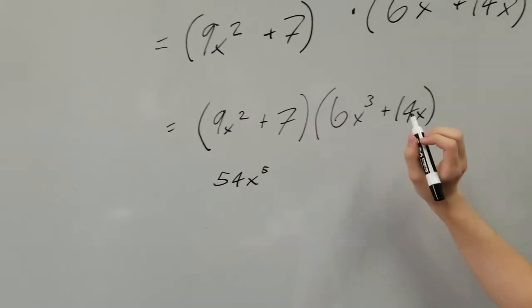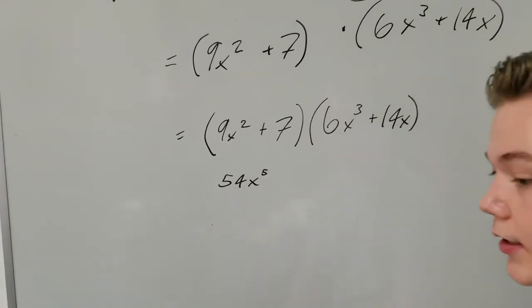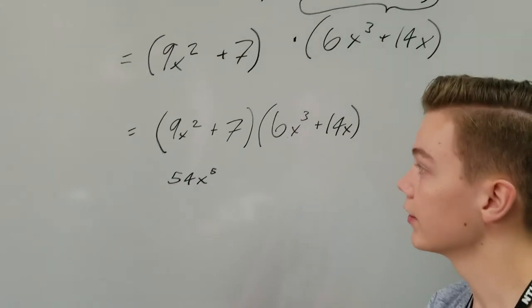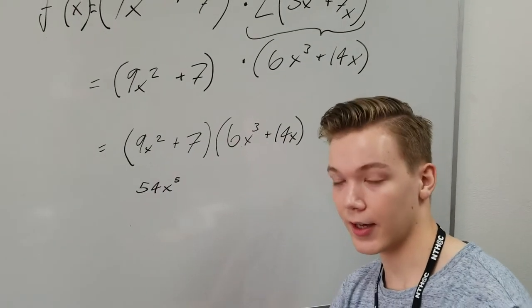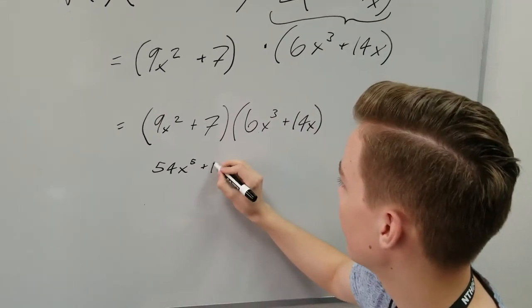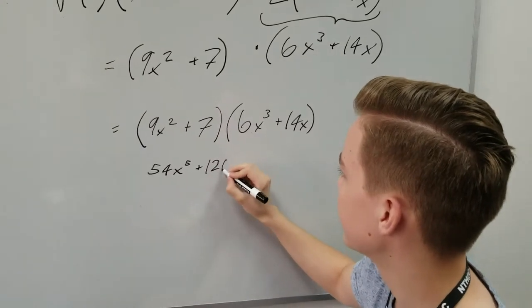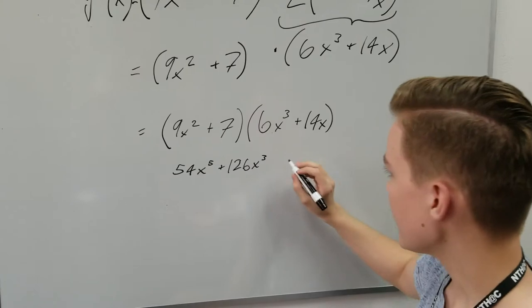And then we have 9x squared times 14x. So, 9 times 14. Let's see. 9 times 4 is 36. Add that to 90. That's 126. So, plus 126x cubed.